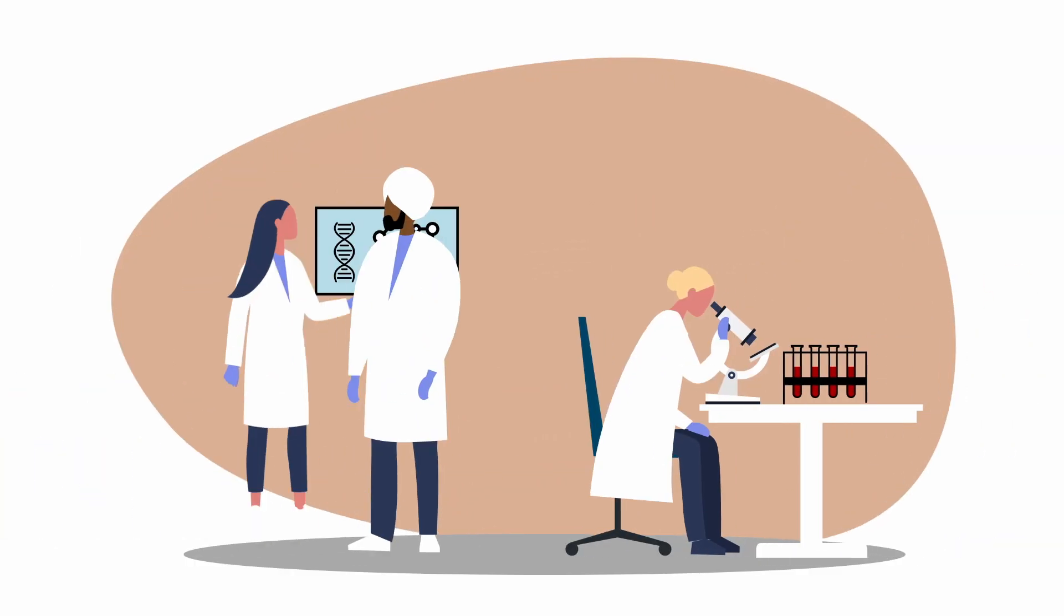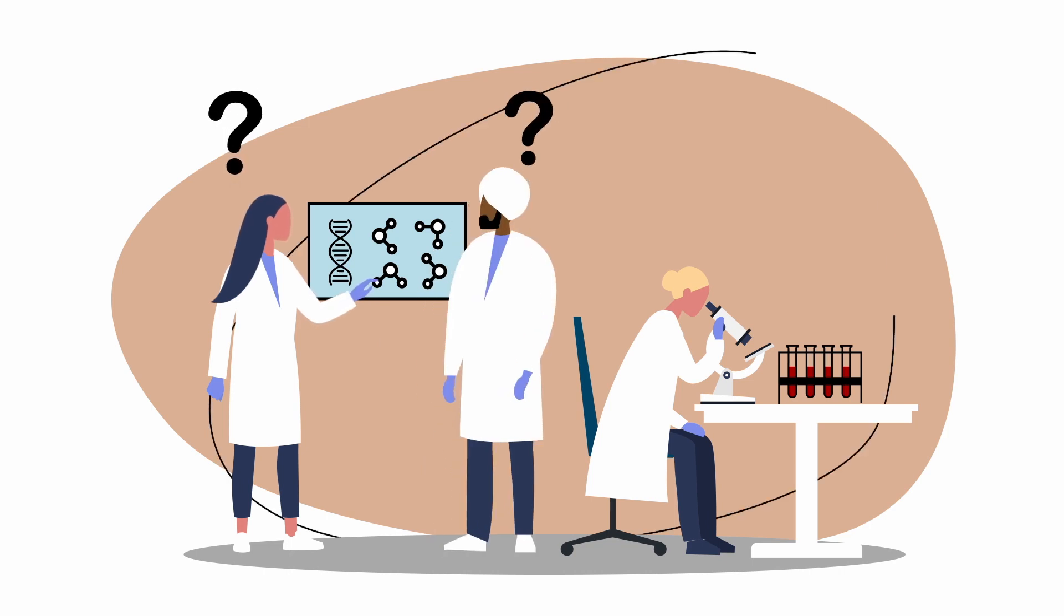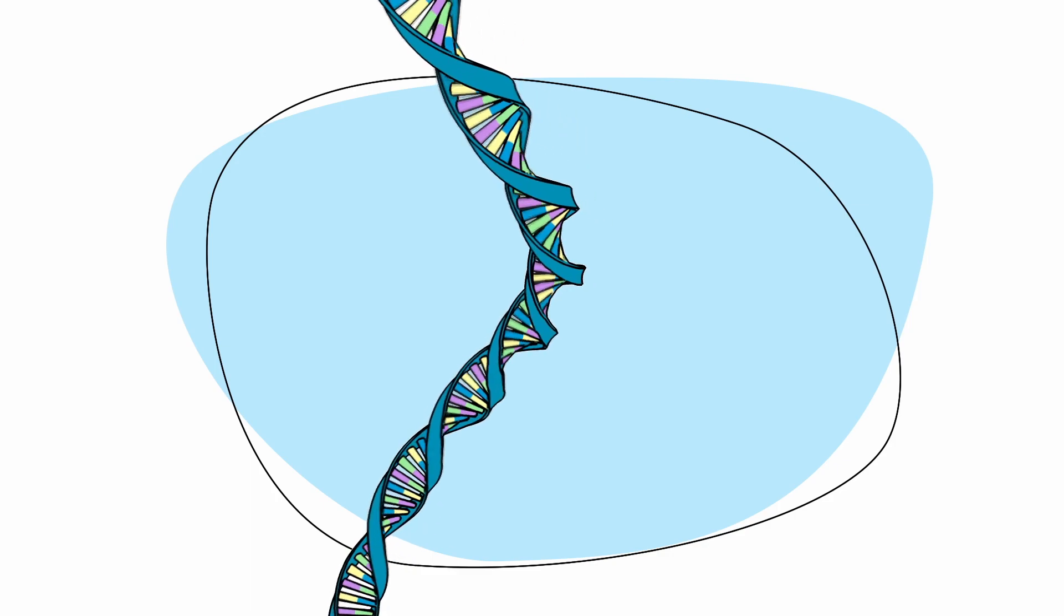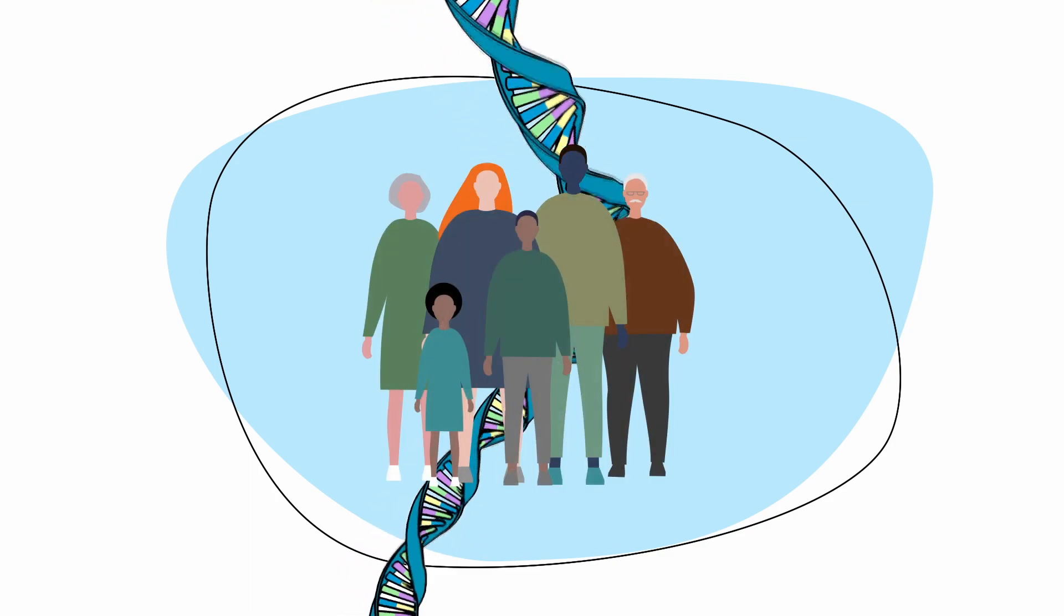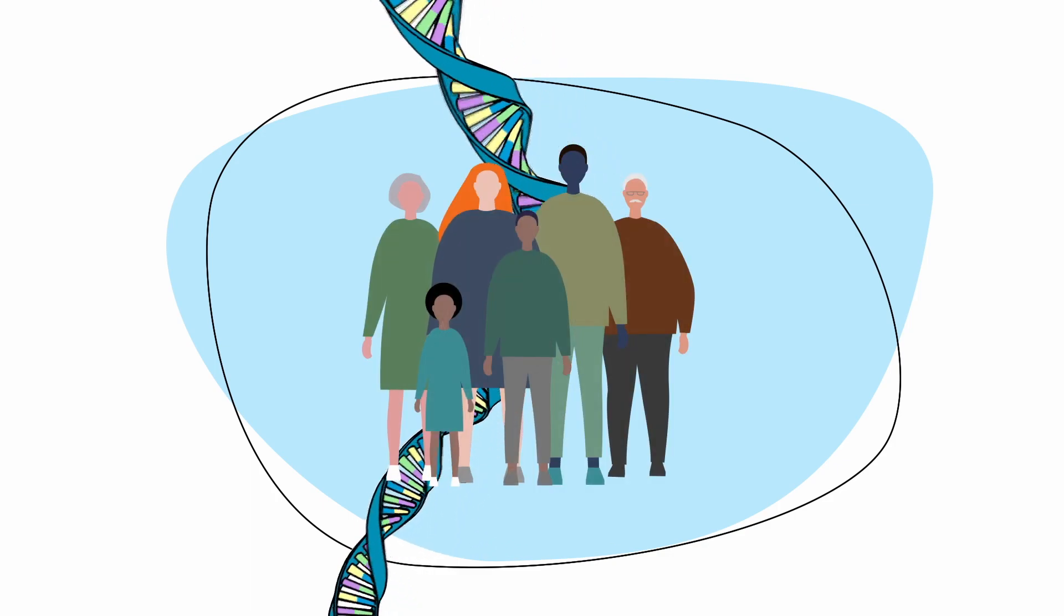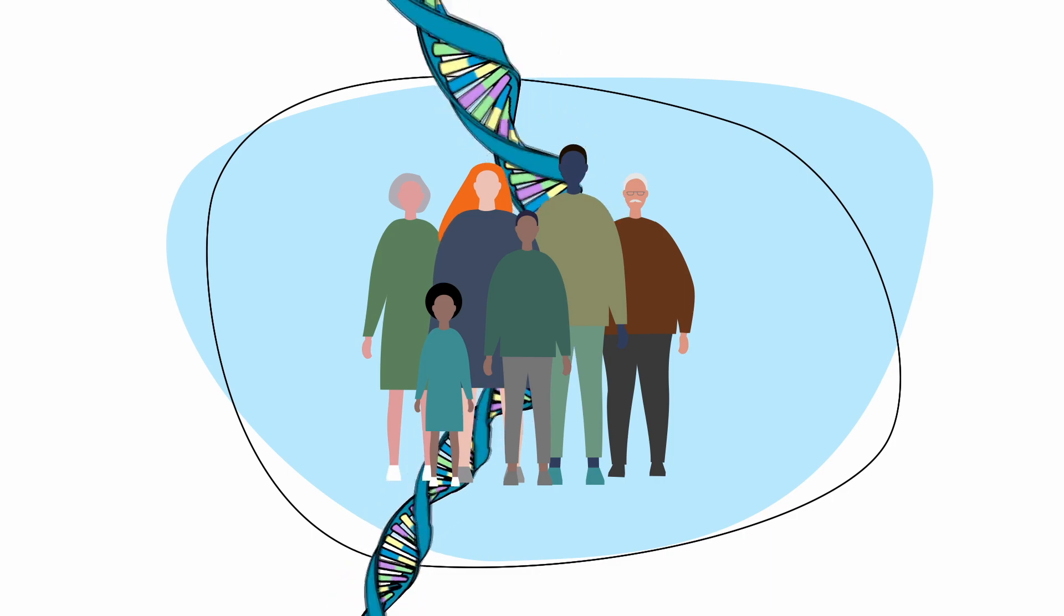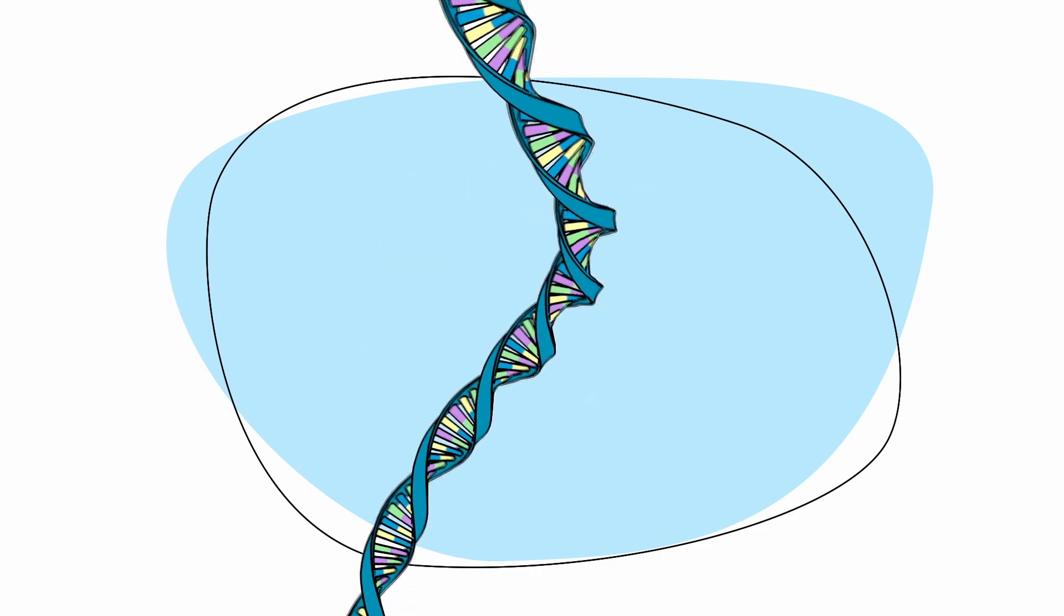We don't know the exact cause of CLL. You can't catch it from somebody else, spread it, or prevent it. You might have a higher chance of developing CLL from an inherited genetic change if a close family member has CLL, but the risk is small, and most people with CLL do not have a family history of it.